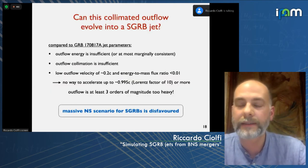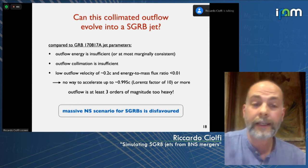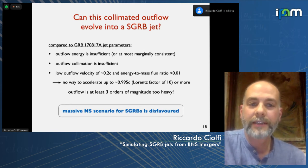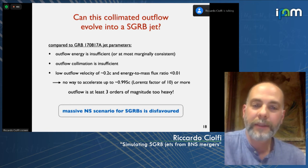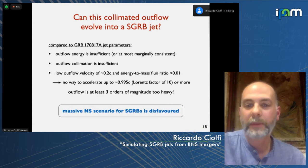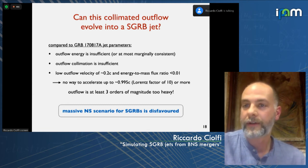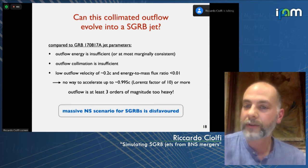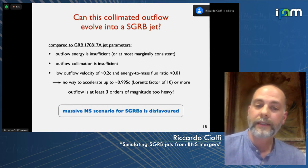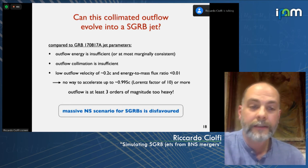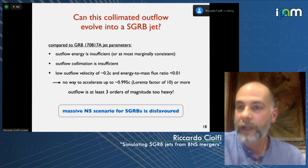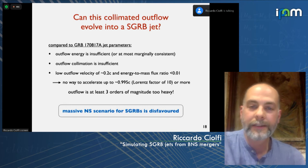Addressing the big question — can this outflow evolve into something compatible with a short gamma-ray burst jet? For the case at hand, the answer is no. The outflow energy is insufficient, the collimation is insufficient, and the biggest problem is velocity: the outflow is limited to 20% of the speed of light. For a short gamma-ray burst jet, we need at least a Lorentz factor of 10, or an energy-to-mass flux ratio of 10. Our outflow has less than 1%, so it's at least three orders of magnitude too heavy to ever accelerate to a Lorentz factor of 10. This simulation thus favors the alternative scenario where a black hole is the central engine.